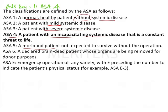ASA E is an emergency operation, with the letter E preceding the number to indicate the patient's physical status. For example, a patient suffering from COVID with respiratory distress would need immediate oxygen administered — this would be classified as ASA E3, where emergency oxygen therapy is needed along with the normal protocols to be followed by the anesthetist.